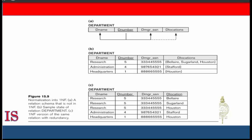A third option: if the maximum number of values is known — for example, if there will be at most three locations for a department — replace D_Locations with three atomic attributes: D_Location_1, D_Location_2, and D_Location_3. This has the disadvantage of introducing null values if most departments have fewer than three locations. It also introduces spurious semantics about ordering among location values, and querying becomes more difficult — for example, how would you write a query to list departments that have Bel Air as one of their locations if Bel Air could be in any of those three attributes?